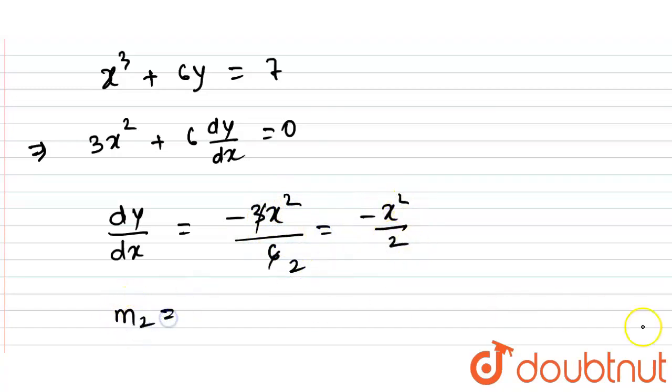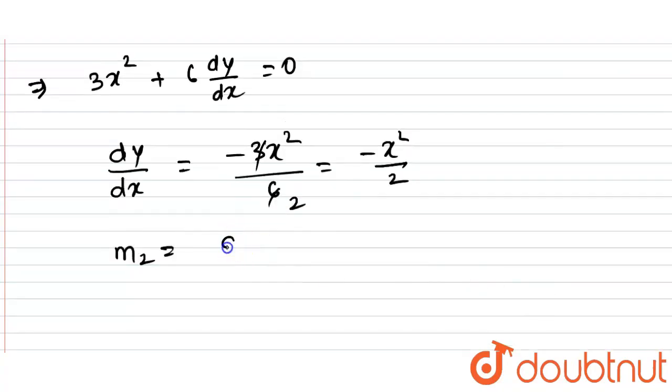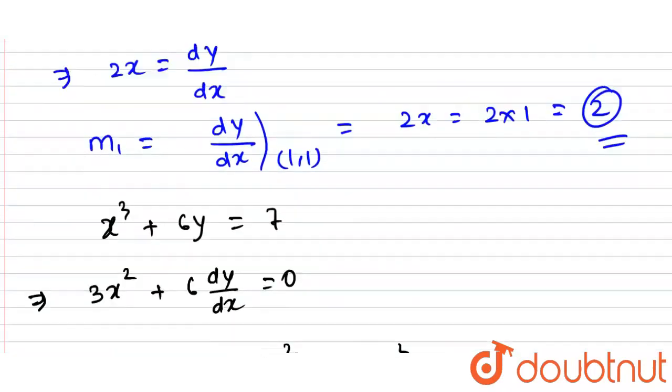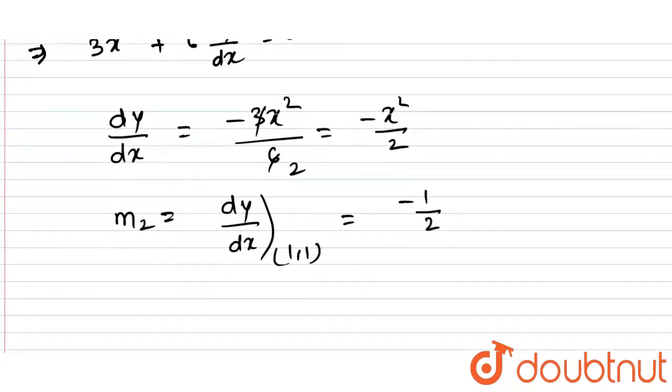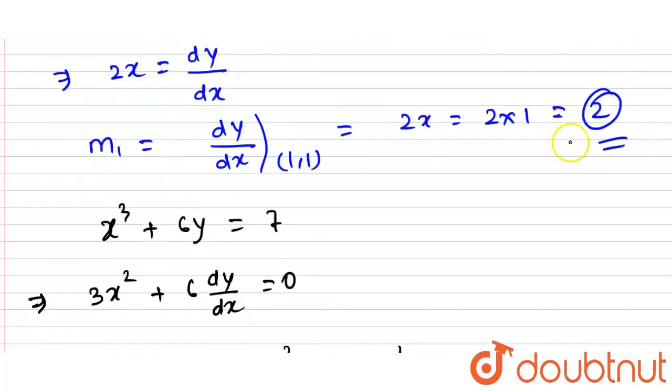So what is m2 here? m2 is dy by dx at (1,1). So this equals minus 1 squared by 2, which is minus 1 by 2. And this is 2. This is equation number 2, and this is our equation number 1.